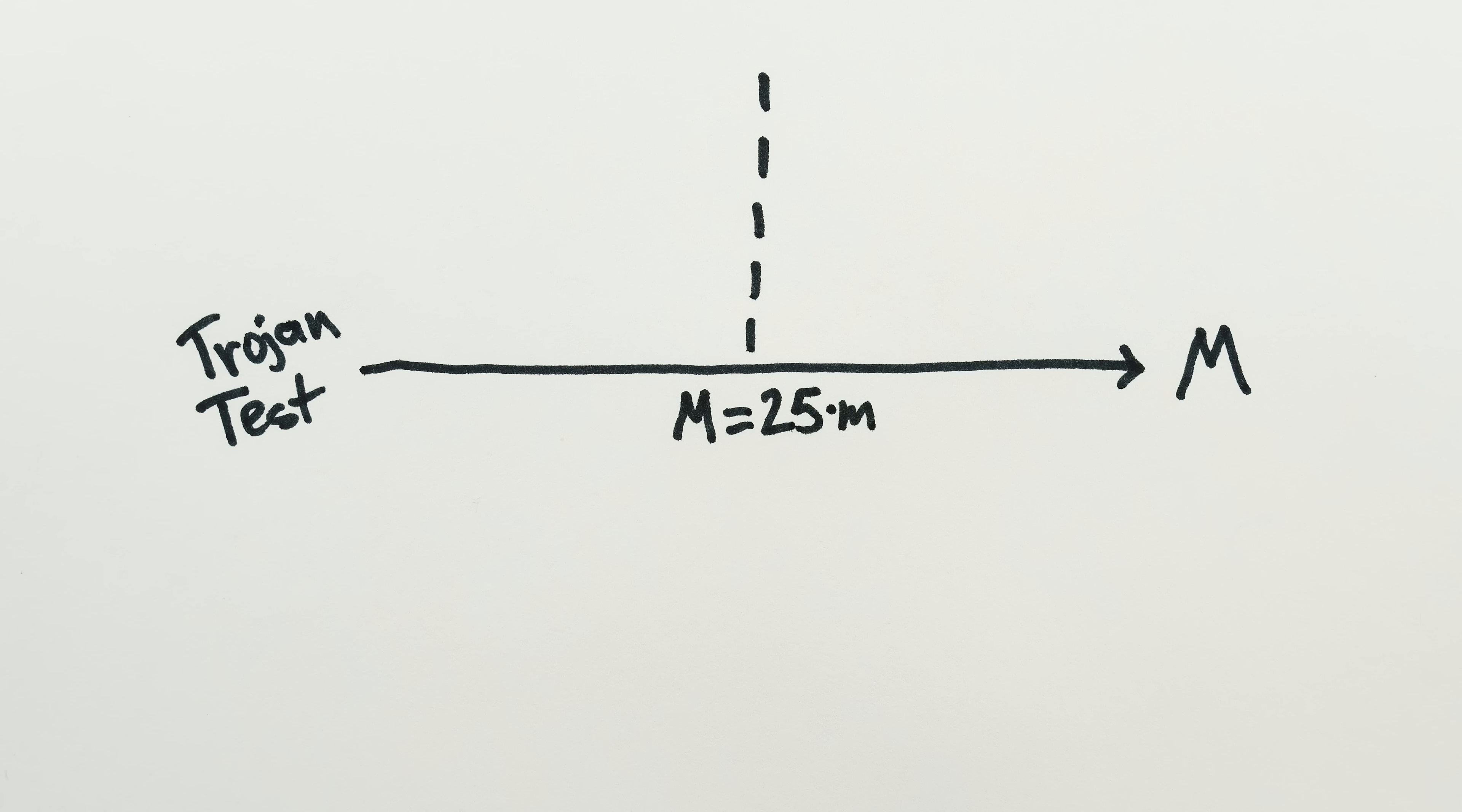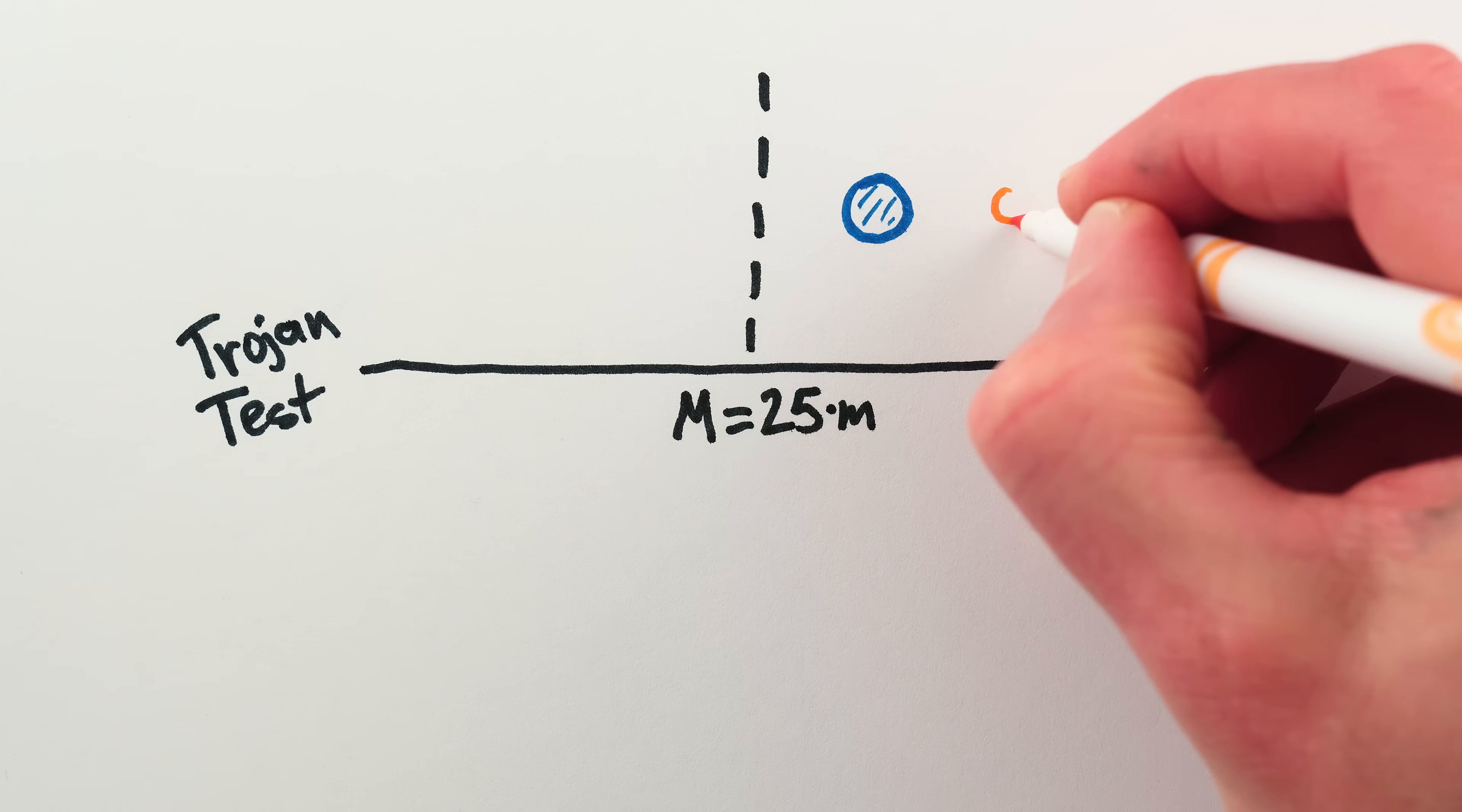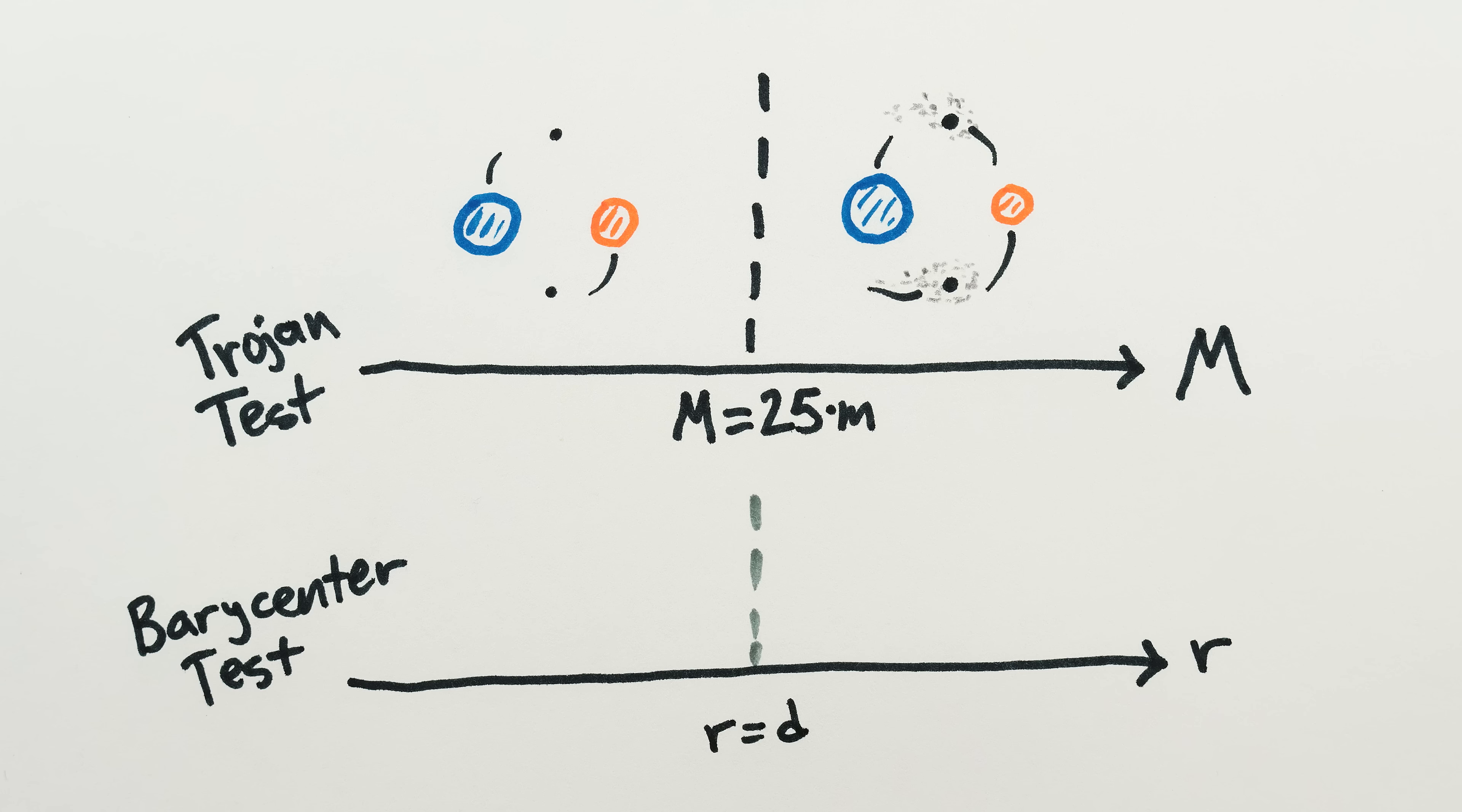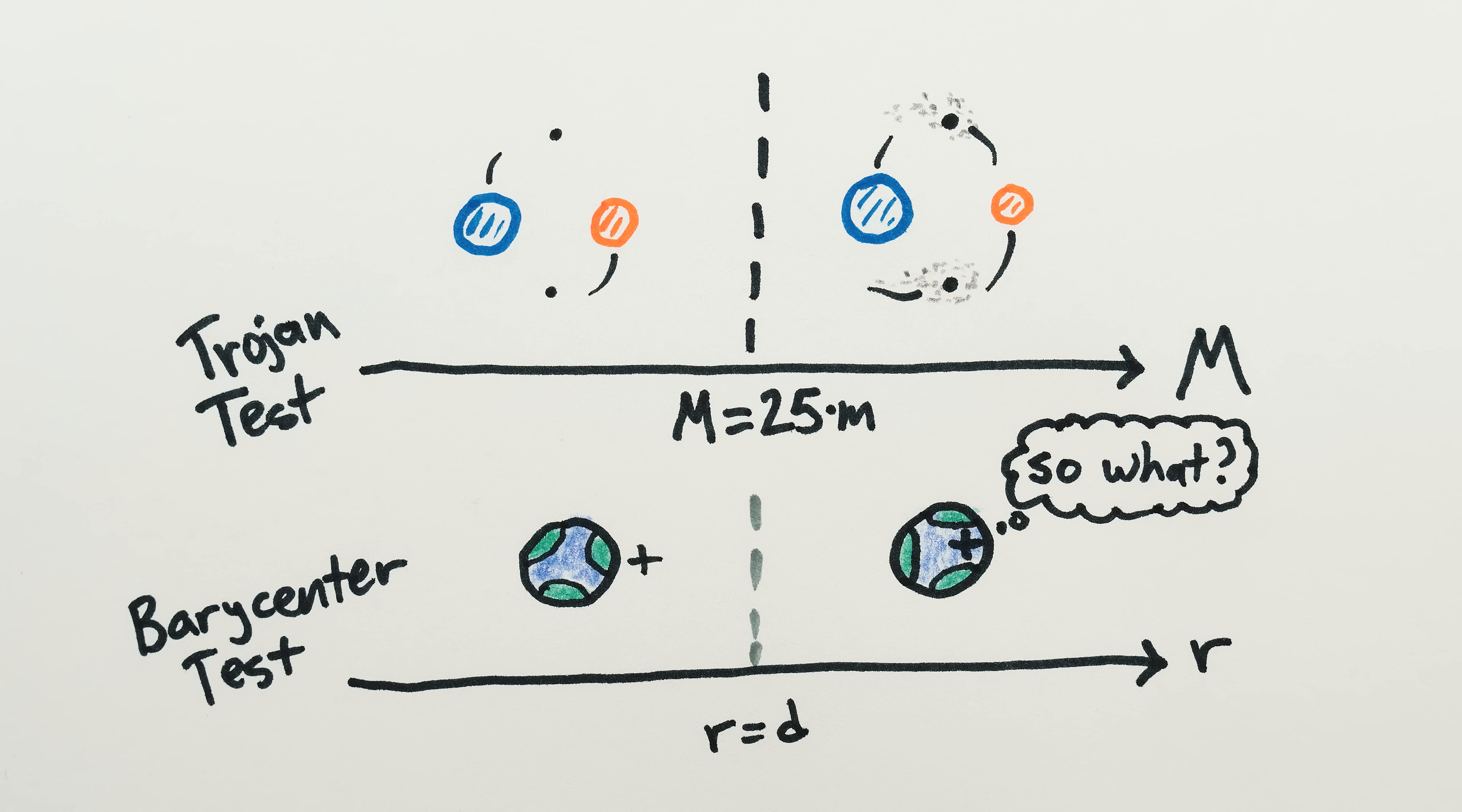Another great thing is that the Trojan test is a cutoff with an actual physical effect. On one side of the cutoff, an object can have Trojan asteroids orbiting along with it. On the other side of the cutoff, Trojans are impossible. Again, this is unlike the Barycenter test, where nothing really happens when the Barycenter moves inside or outside of an object's radius, because they're two unrelated things.